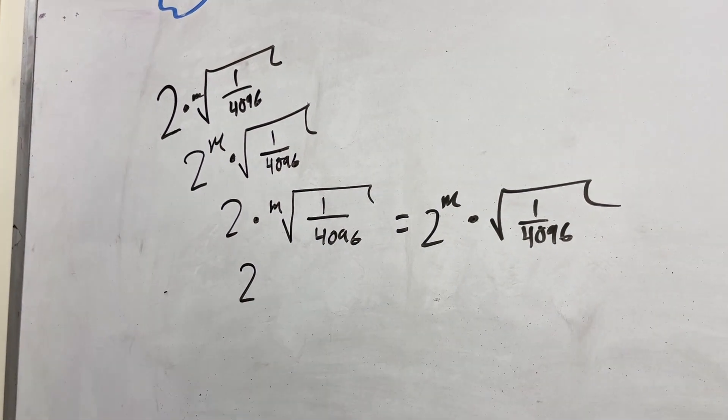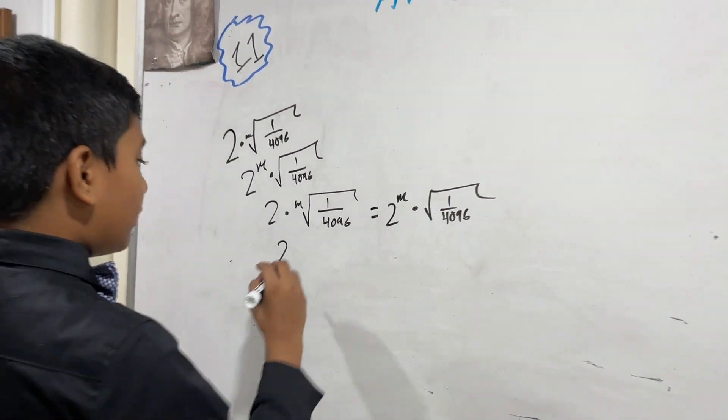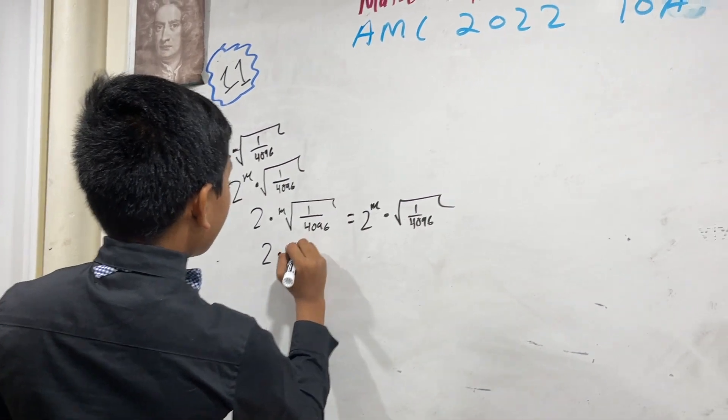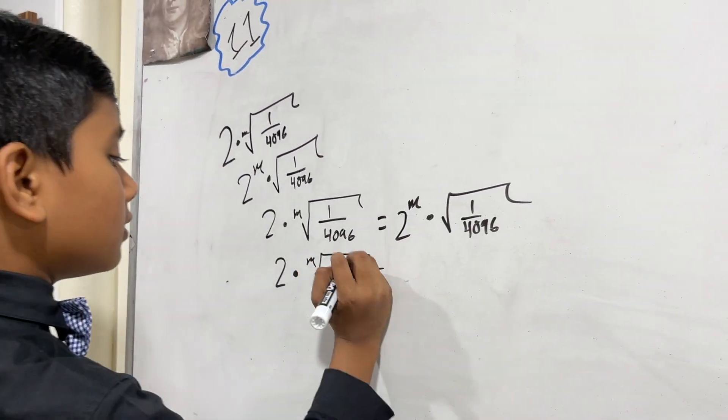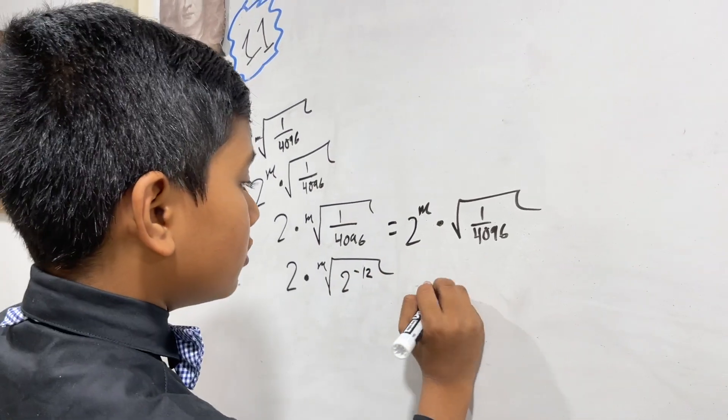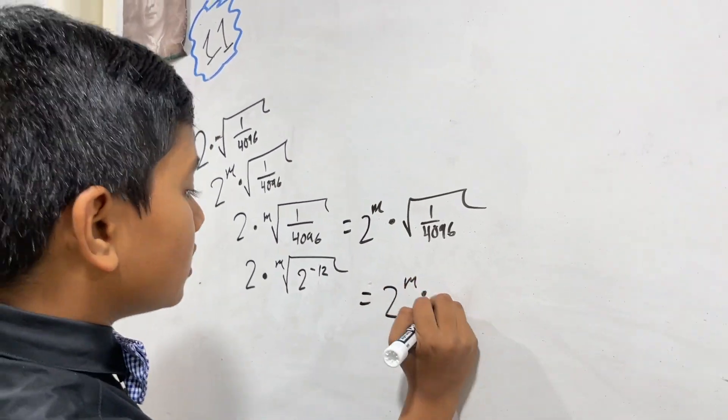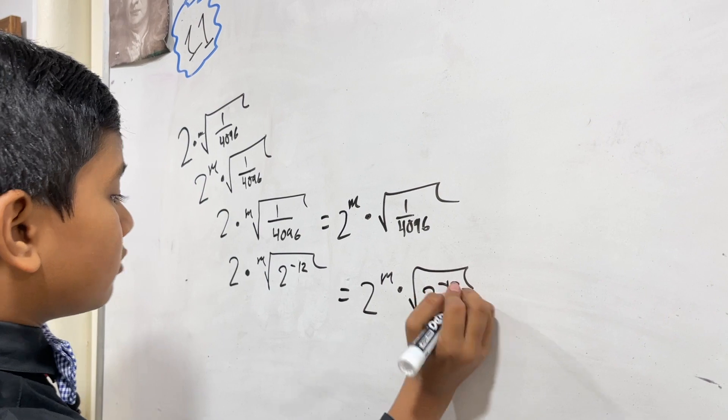So 1 over 4096 would be 2 to the minus twelfth power. So we have the mth root of 2 to the minus 12, equal to 2 to the m times the square root of 2 to the minus 12.